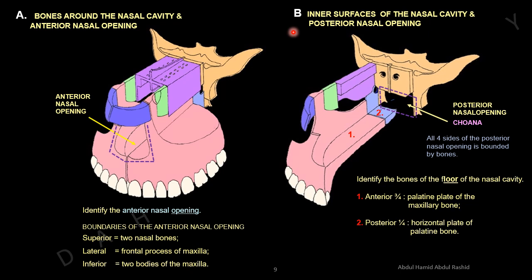Diagram B shows the inner surfaces of the nasal cavity and the posterior nasal opening. The inner surfaces include the right lateral wall and the upper surface of the hard palate. The bones here are: nasal bone, frontal process of the maxilla, lacrimal bone, ethmoid bone, perpendicular plate of the palatine bone, and the medial pterygoid plate of the sphenoid bone.